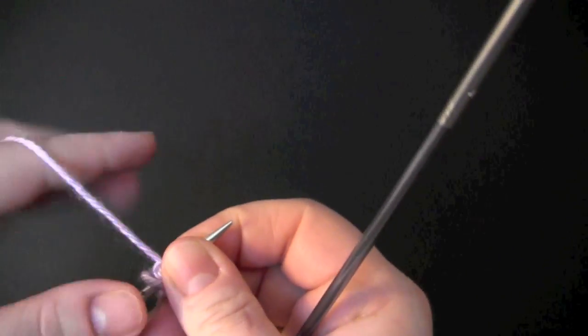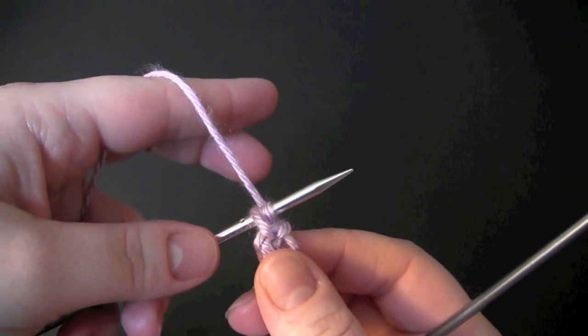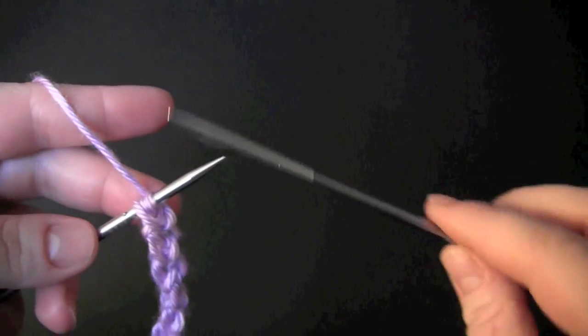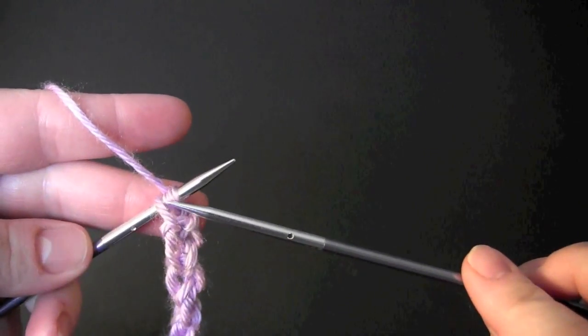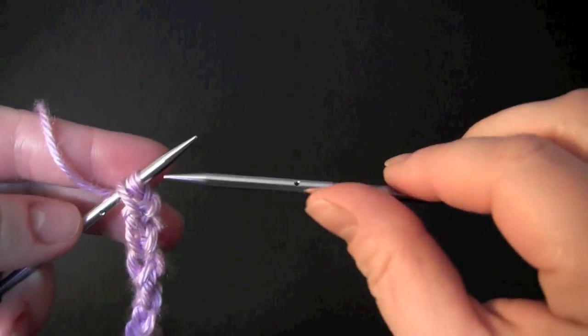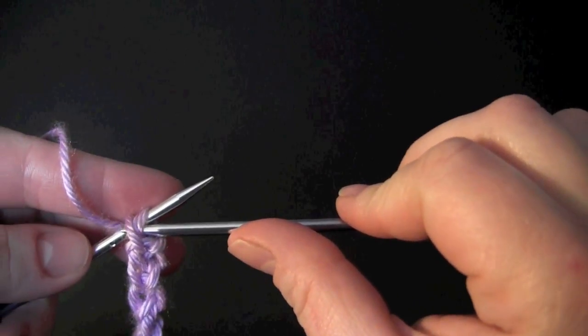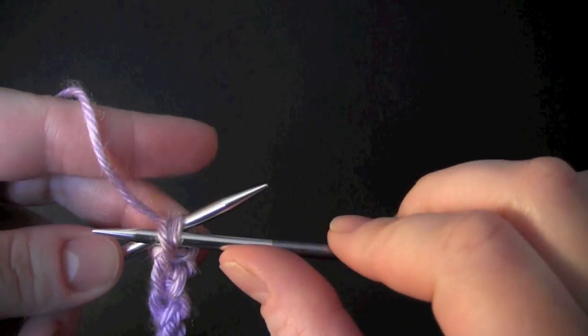And then you want to hold your working yarn in back of the work, even though we're going to be purling these two stitches together. So take your right needle and go into those two stitches to purl.